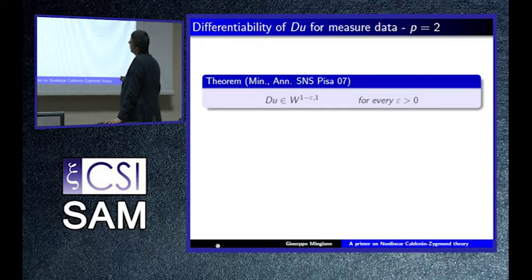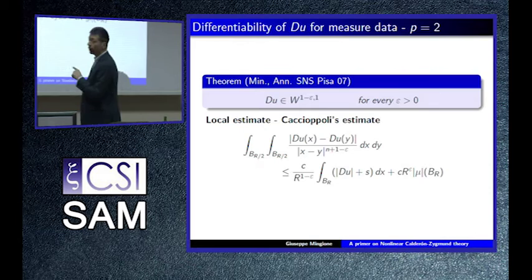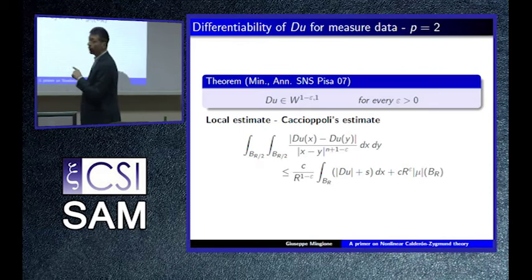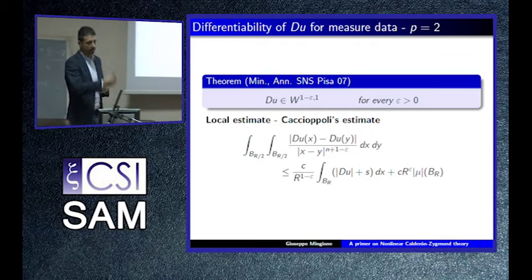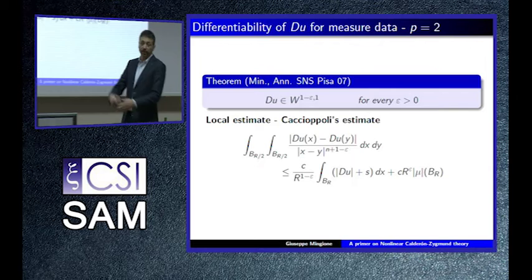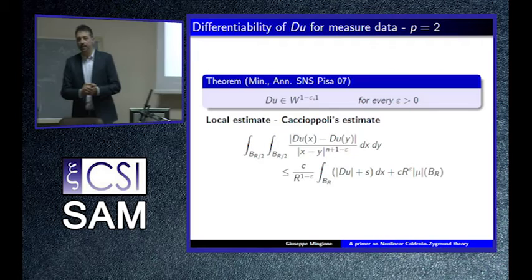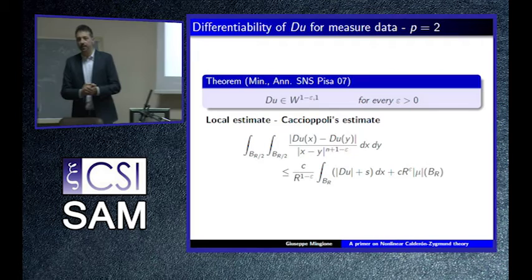The fractional Caccioppoli estimate is the same version I discovered simultaneously with Caffarelli and Siring in a paper of a few years ago that started this fractional analysis. The difference is that I start from a local equation — the whole effort is to prove that the fractional inequality still holds — while in their case they start from a fractional operator so the fractional Caccioppoli inequality comes directly, and then the iteration is similar.